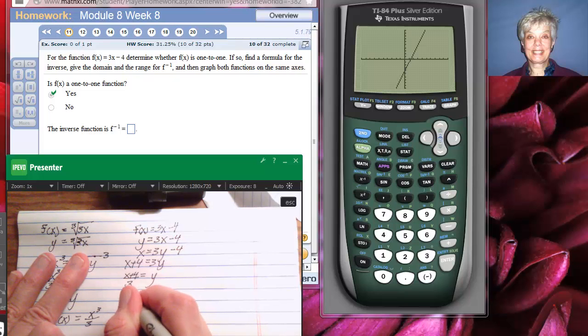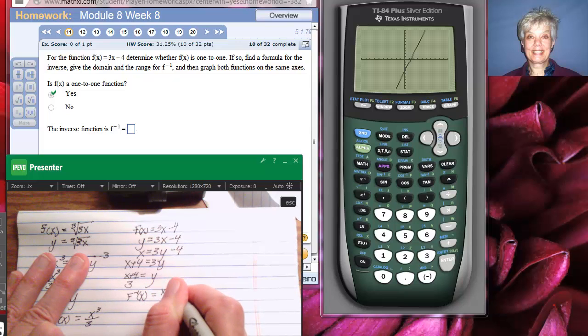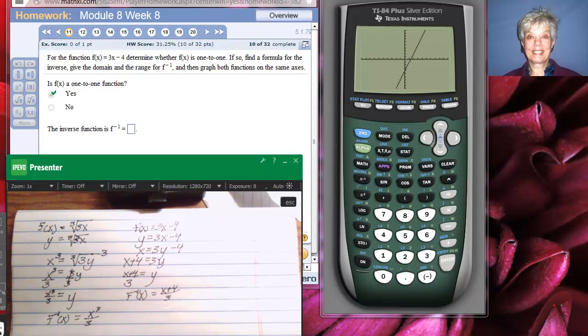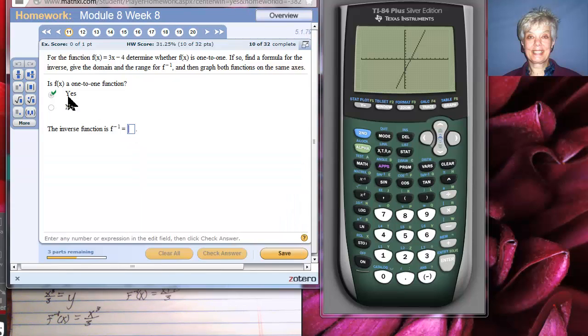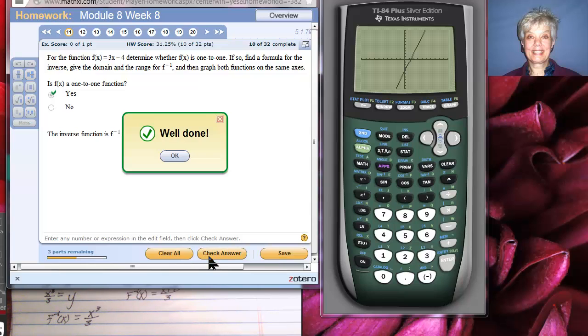So, f inverse of x is x plus 4 over 3. Let's write it. x plus 4 divided by 3. Check answer.